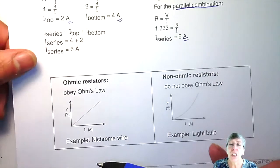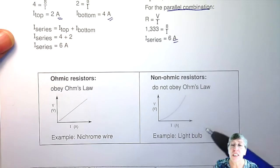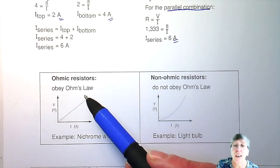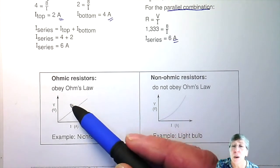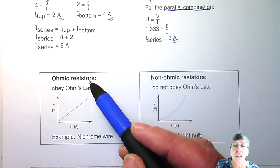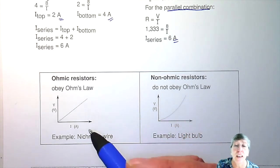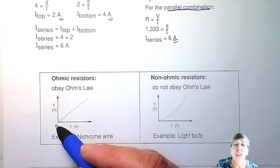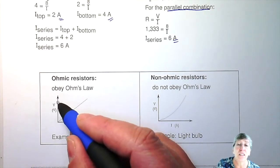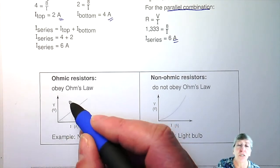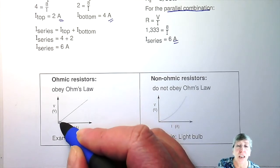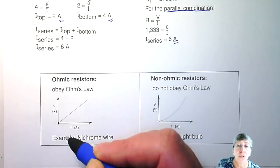Now there are many different types of resistors and they don't all obey Ohm's law. If they do obey Ohm's law, we call them ohmic resistors — like nichrome wire. There the resistance is constant and the potential difference will be directly proportional to the current, so you'll get a straight line through the origin.